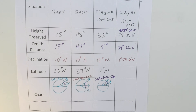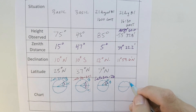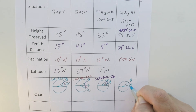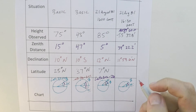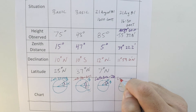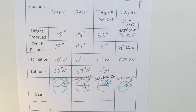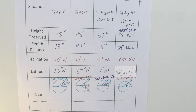The last step is to think about the situation. We're in the northern hemisphere and the Sun is also in the northern hemisphere but lower than us, so latitude equals zenith distance plus declination. Adding 34° 22.2' and 11° 59.6' together gives us a latitude of 46 degrees 21.8 minutes north.